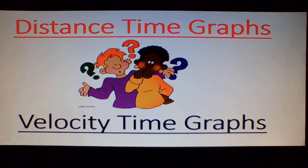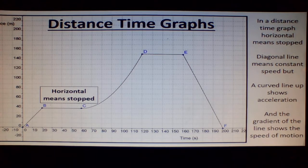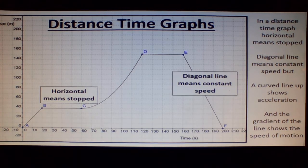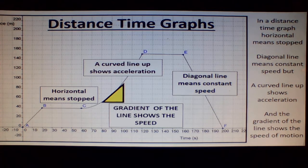Distance Time Graphs and Velocity Time Graphs. In a distance time graph, horizontal means stop, diagonal line means constant speed, but a curved line up shows acceleration, and the gradient of the line shows the speed of motion.